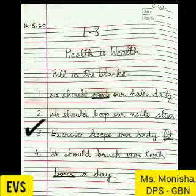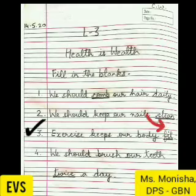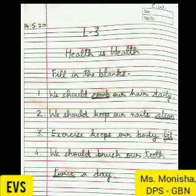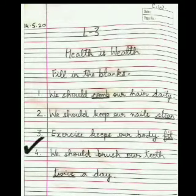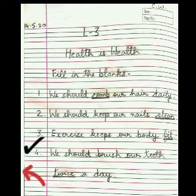Number three: exercise keeps our body fit. So we have written fit, and the sentence is now complete. Children, I hope you have understood the concept of fill in the blanks, which I have explained in the above three examples. Now the last point is: we should brush our teeth twice a day. As you can see, twice is underlined. So we have filled twice in this sentence, and then it makes a complete sentence. We should brush our teeth twice a day.